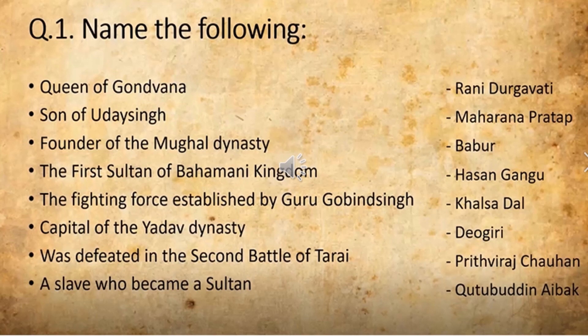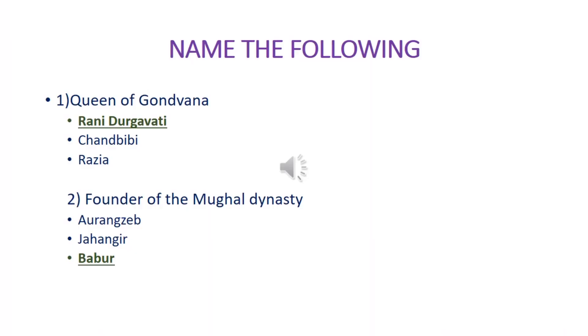On the next slide I have put two questions so you can get a clear idea how you are going to get such questions for your online assessment. From question number 1, I have taken the first and the third one. The first one: Queen of Gondwana — three options are given: Rani Durgavati, Chandvidi, and Radhya. The correct answer is Rani Durgavati.